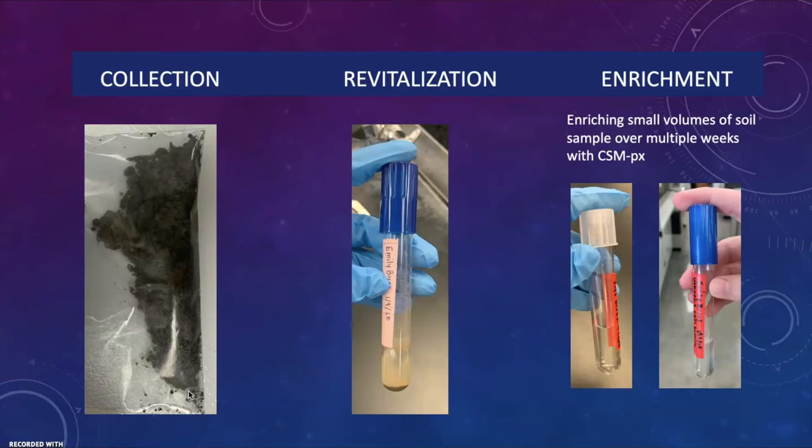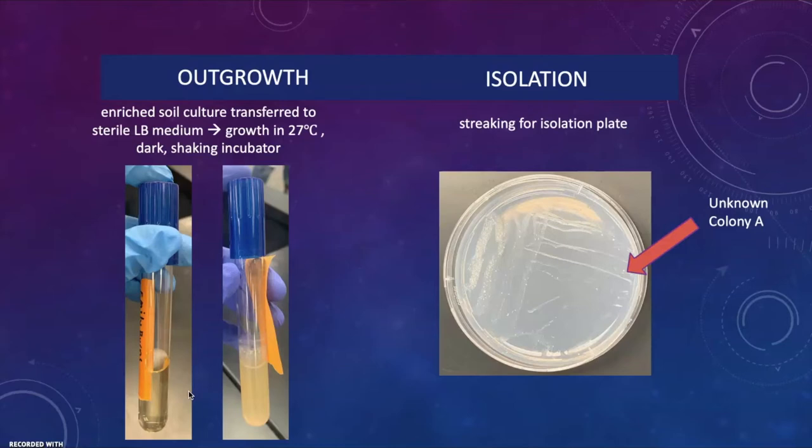For the outgrowth, it is just an enriched soil culture transfer to sterile LB medium, then grown at 27 degrees Celsius in a dark shaking incubator. On the left you can see the newly inoculated LB medium with the soil culture, and on the right is the culture after a week of growth — the cloudiness indicates the growth. For the isolation, we took the broth of growth and streaked it for isolation to get a specific colony to use for the tests.